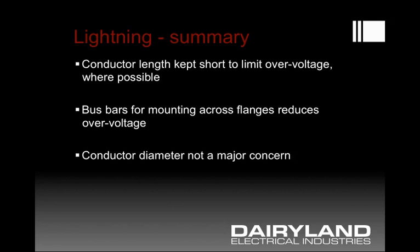Bus bars provide the best overvoltage limitation because they have lower inductance and produce lower voltage than a flexible conductor system. If you do use conductors, you want to limit the length, and diameter isn't that big a factor. You just want to have an appropriate ampacity for your system — that's where diameter comes in. But increased diameter doesn't greatly help the inductance problem; rather, that comes from length limitation.